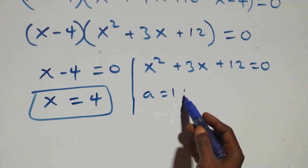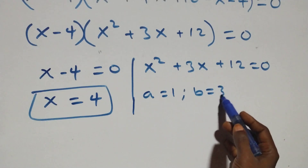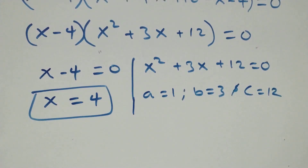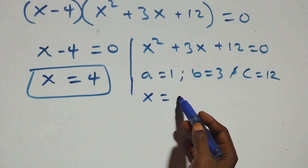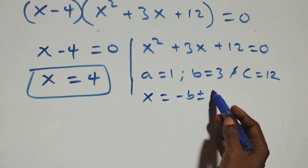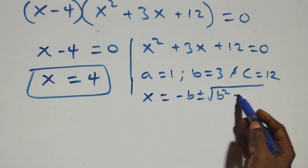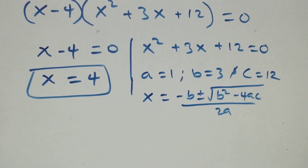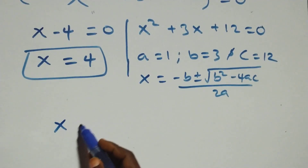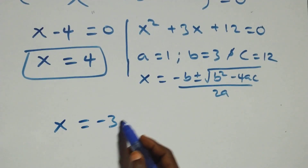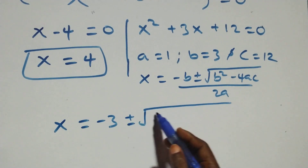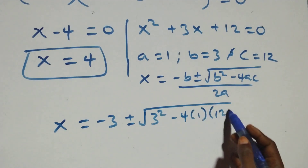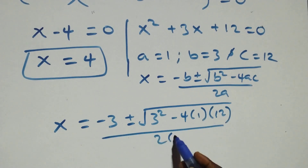For the quadratic equation x² + 3x + 12 = 0, we have a equals to 1, b equals to 3, and c equals to 12. Using the quadratic formula: x equals to minus b plus or minus square root of b squared minus 4ac, all over 2a. Substituting, x equals to minus 3 plus or minus square root of 3 squared minus 4 times 1 times 12, over 2 times 1.